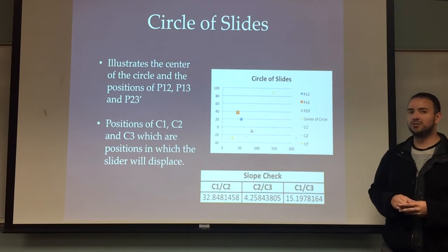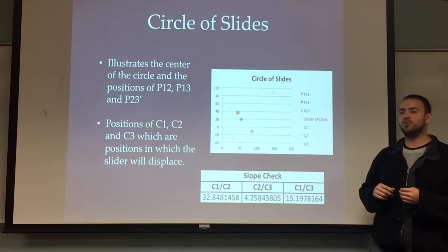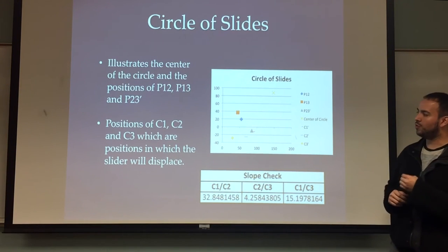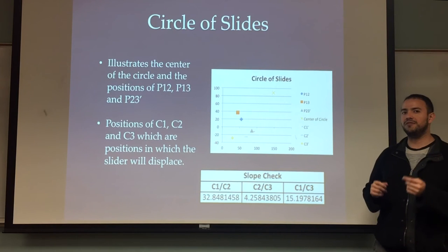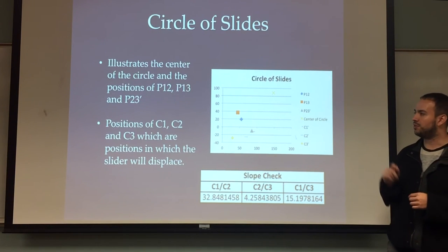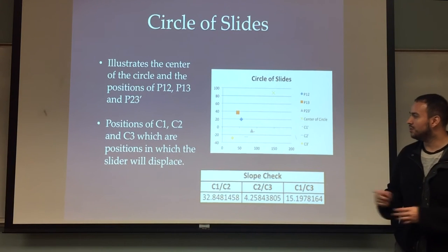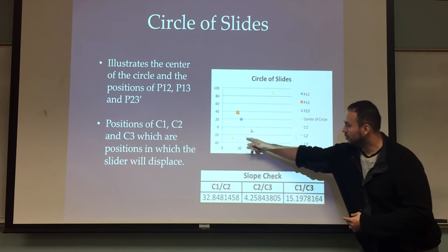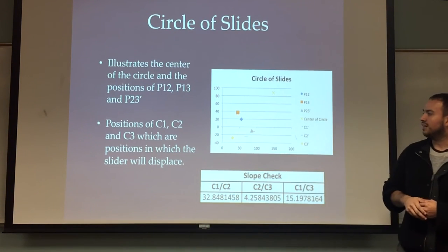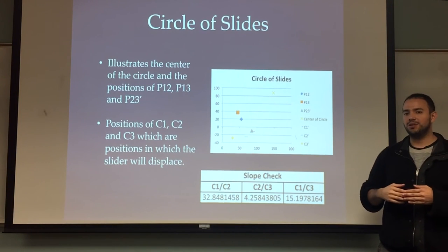And so the way we find this is through some simple geometry, finding beta, theta, as well as the difference between poles of 1,2, 1,3, and 2,3. The differences of them give us some parameters to calculate P2,3 prime. So the positions C1, C2, and C3 listed down here will tell us the approximate sliding mechanism of our slider.